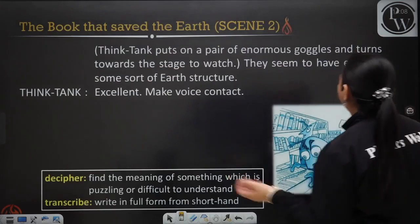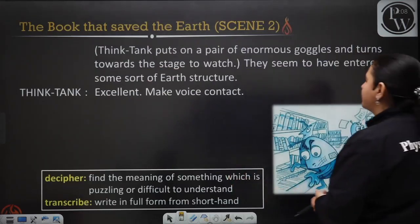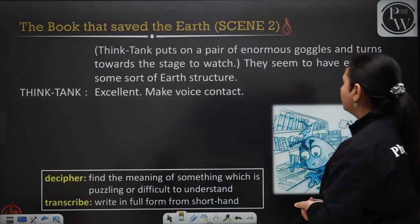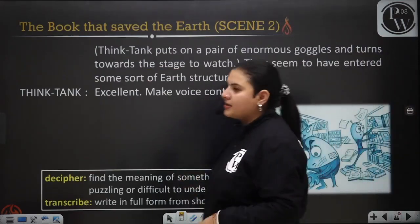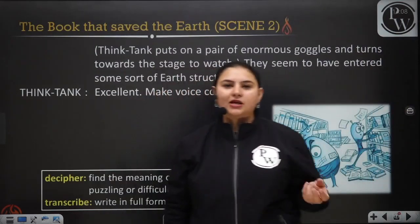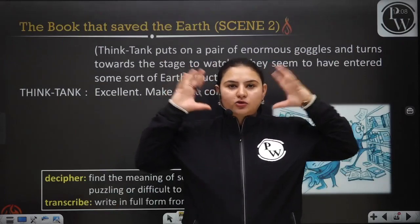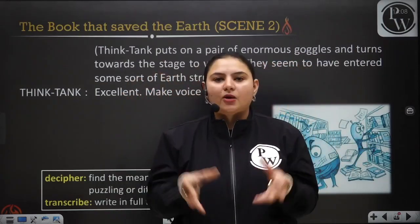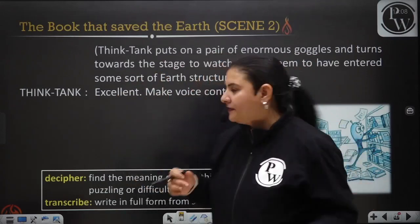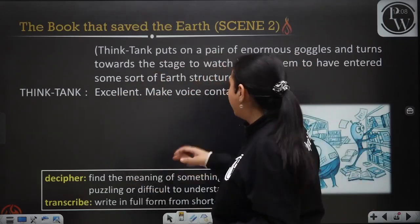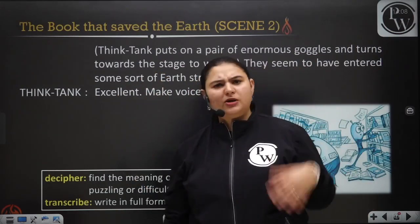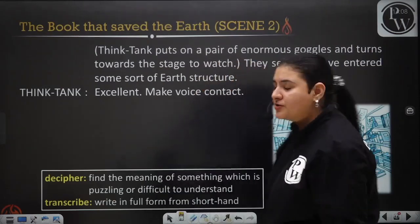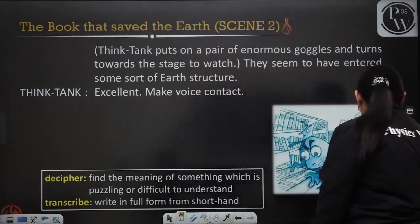Noodle, adjusting the knobs in Mars Space Control, says: I have a close sighting of the space crew, sir. Think Tank puts on a pair of enormous goggles and watches the stage. He says: they seem to have entered some sort of earth structure — excellent, make voice contact. Now they want to set up voice contact to give instructions to the people on Earth.